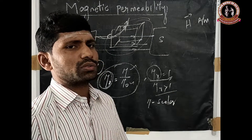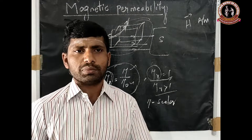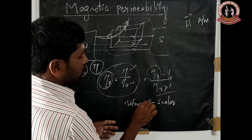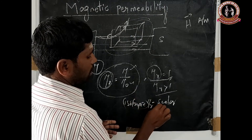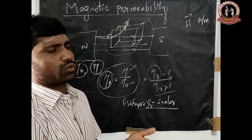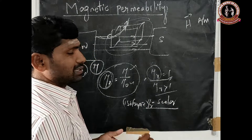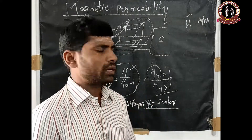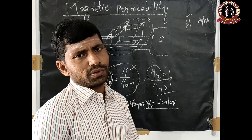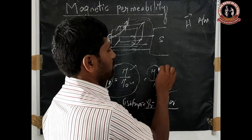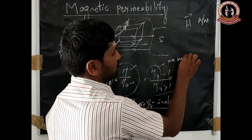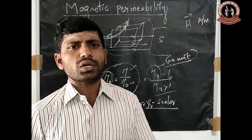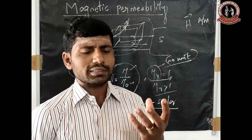Mu-r is a scalar value in an isotropic medium, where the magnetic field is uniform. In a non-isotropic medium, the magnetic field is non-uniform. Relative permeability has no unit — it is a dimensionless number.